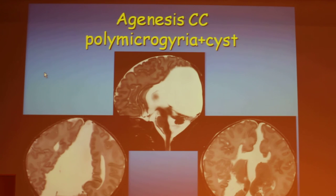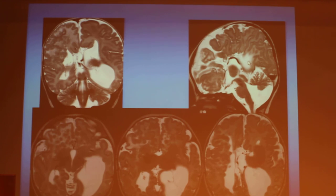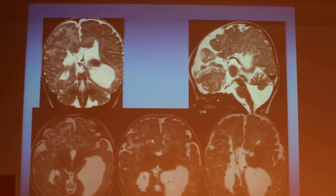We have to check for other malformations when agenesis of corpus callosum is found. In this case we have a large interhemispheric cyst and polymicrogyria. In another case there is absence of the corpus callosum, sub-ependymal nodular heterotopia, heterotopic gray matter in the frontal region like a Dalmatian brain, and also polymicrogyria in the frontal region — very complex malformations.